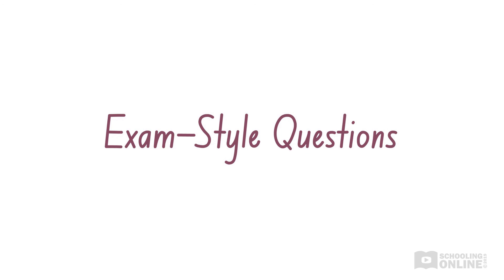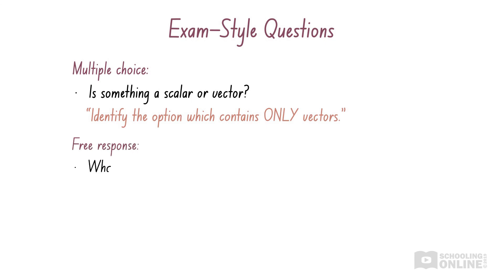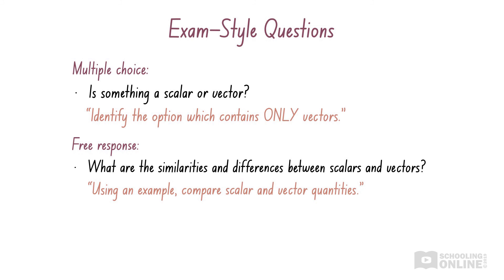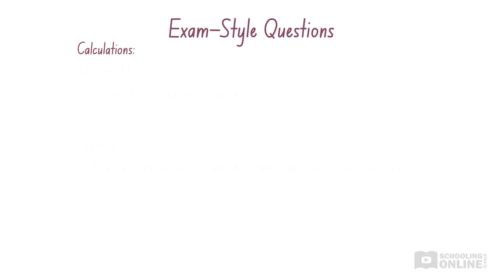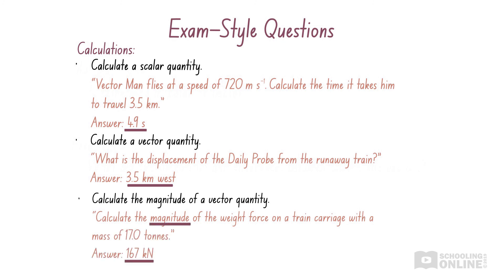Let's pause for a moment to consider the types of questions you might be asked in exams. Firstly, you might be asked whether a given quantity is a scalar or vector. You might also be asked to identify the similarities and differences between scalars and vectors. Additionally, you will need to be careful when performing calculations. If a question asks you to calculate a scalar quantity, then you need to include its magnitude and units. On the other hand, if a question asks you to find a vector quantity, then you will need to include its magnitude, units and direction in your answer. Meanwhile, if a question asks you to find the magnitude of a vector, then you do not need to include its direction.